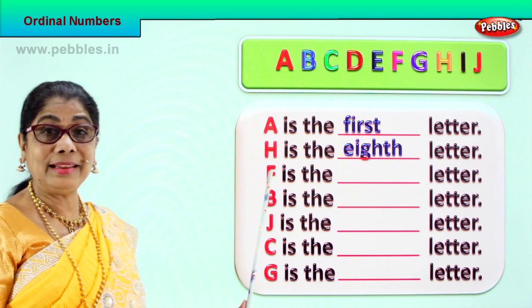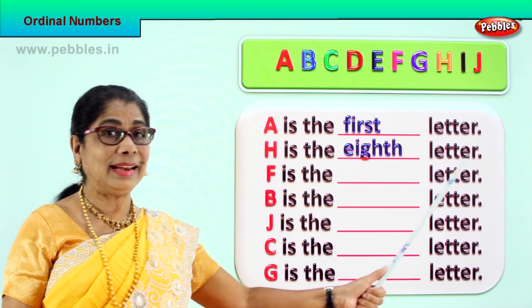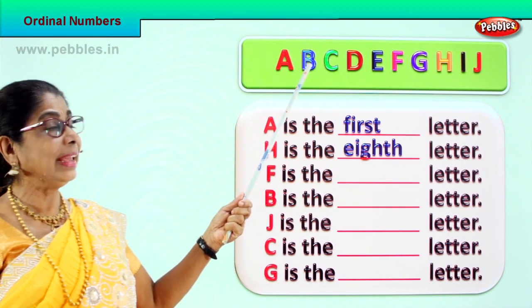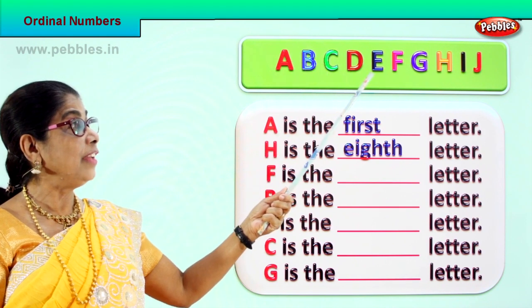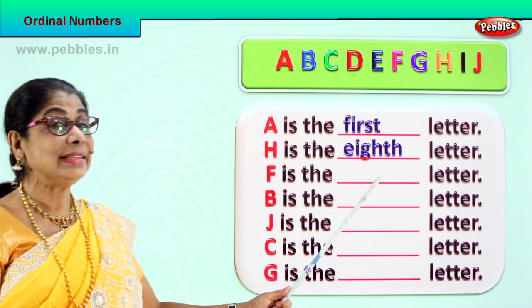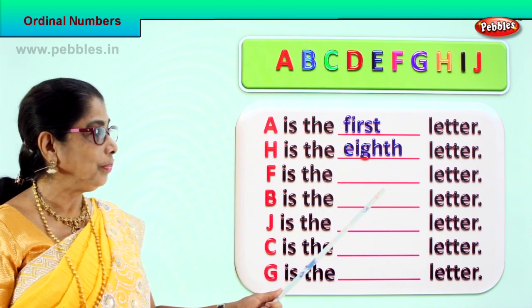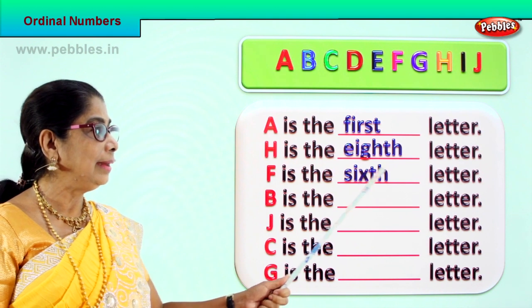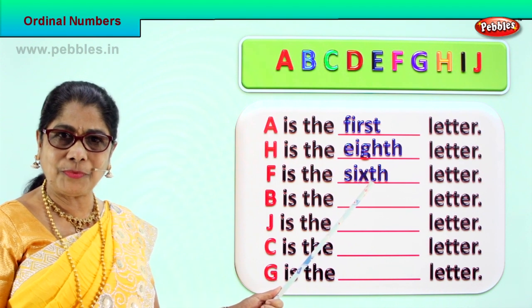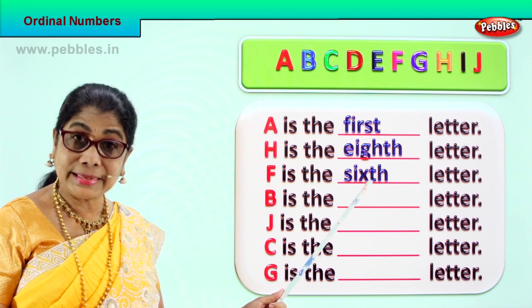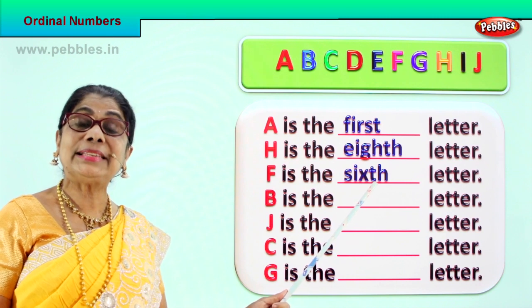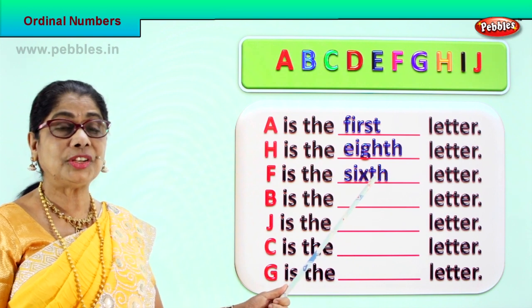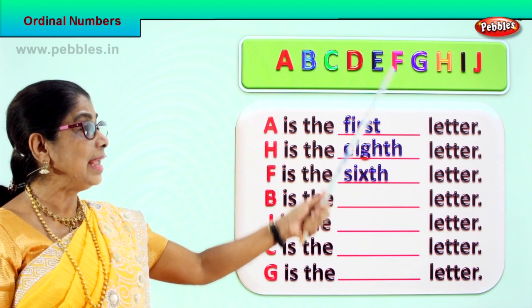Now let's look at the letter F. What's the place for the letter F? First, second, third, fourth, fifth — letter F is the sixth letter. Spell six: S, I, X. All you need to do is add TH. Spell with me: S, I, X, T, H — sixth. F is the sixth letter.